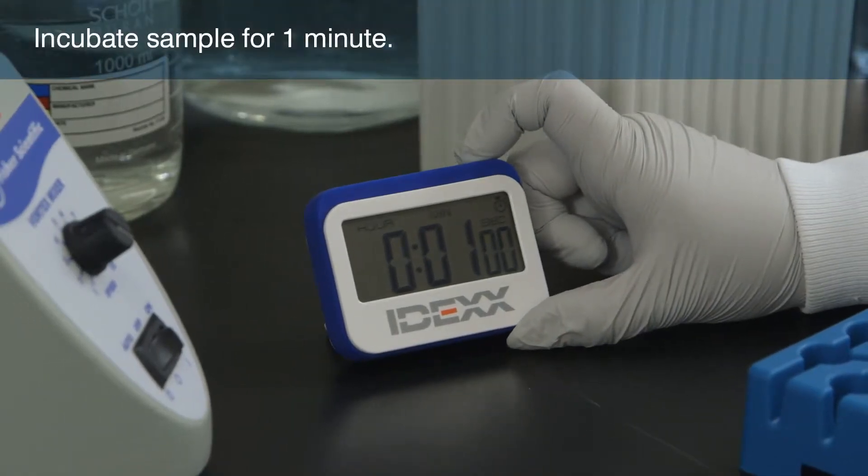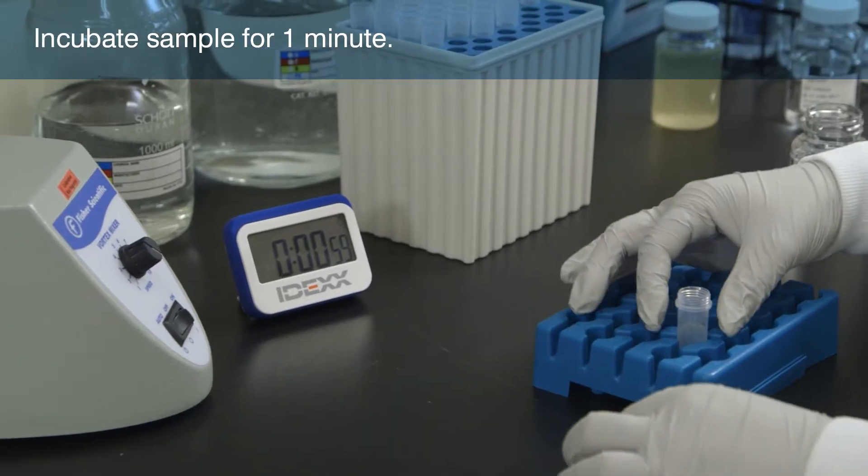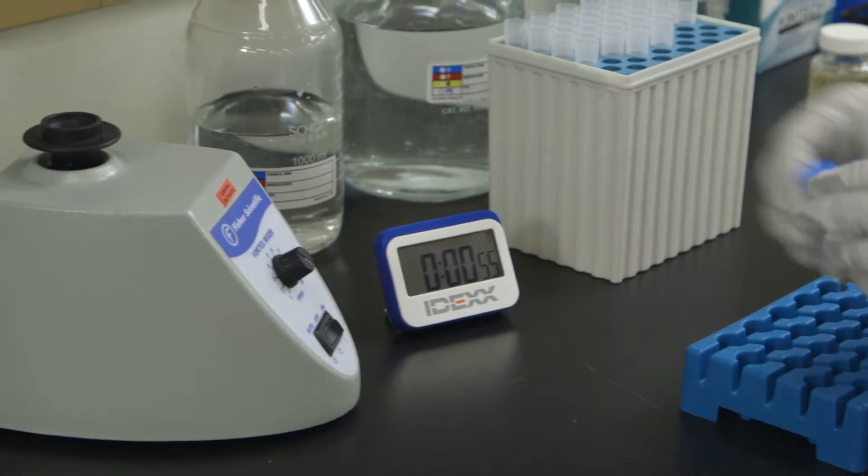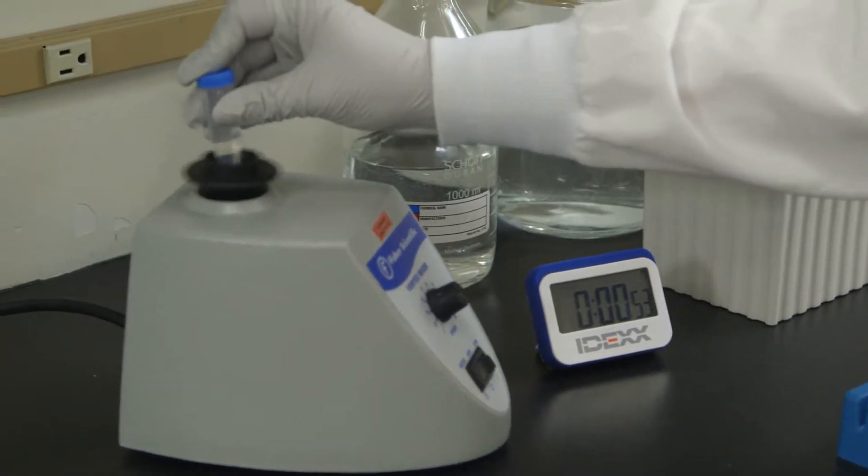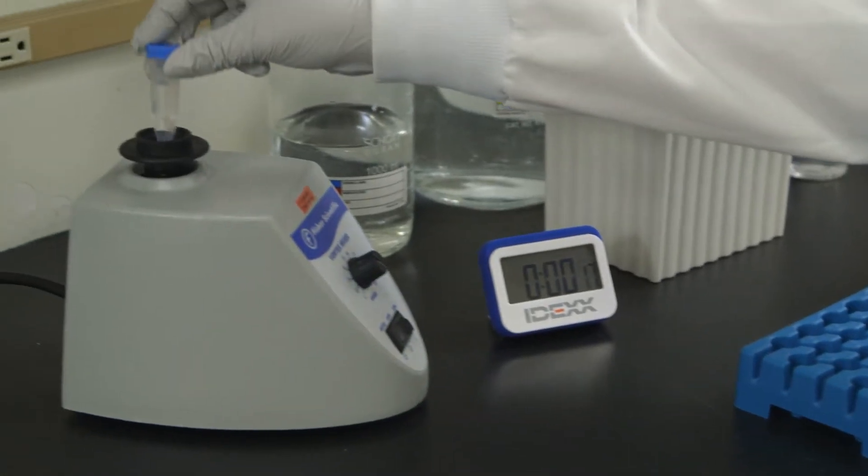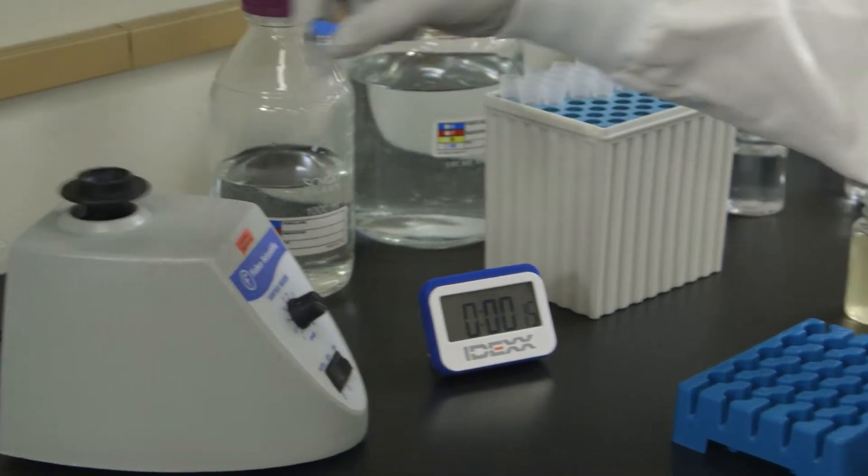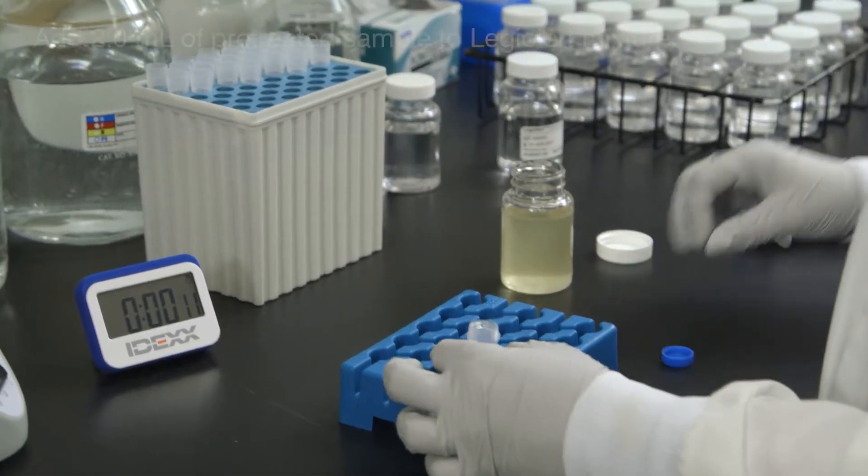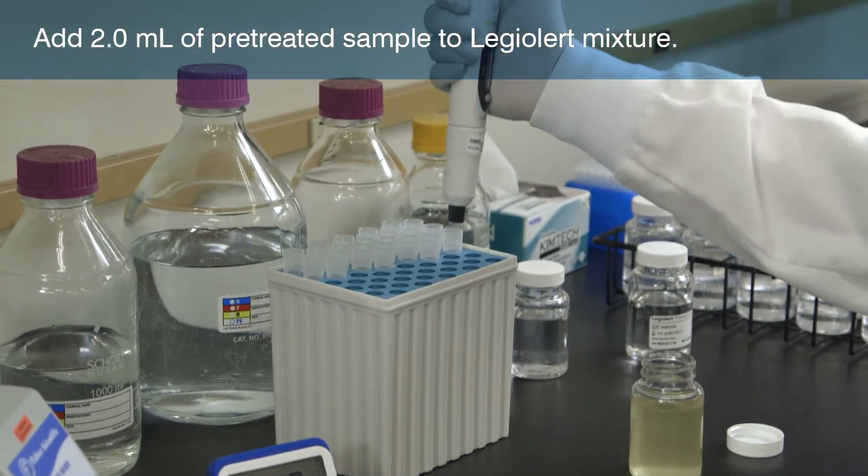Start a 1-minute timer and then mix the contents thoroughly. Mix again before the 1-minute is up. At 1 minute, immediately transfer 2 mL of the treated sample to the vessel containing the dissolved LEG-ALERT reagent.